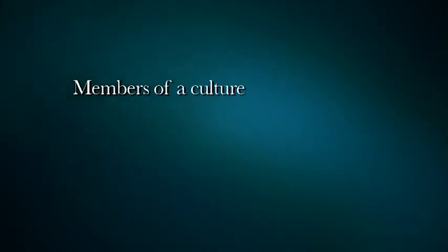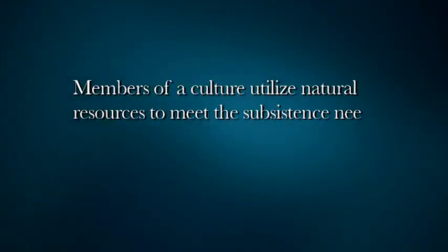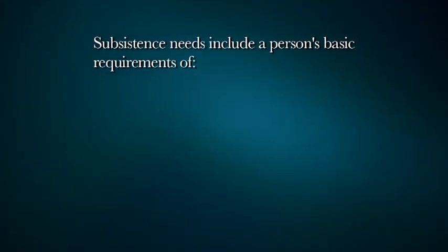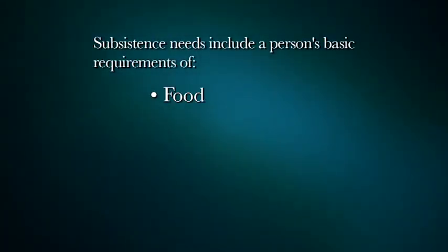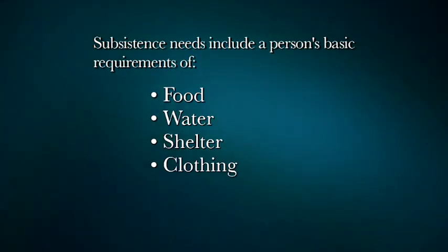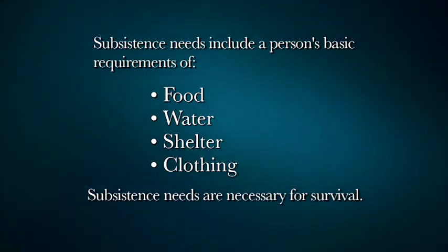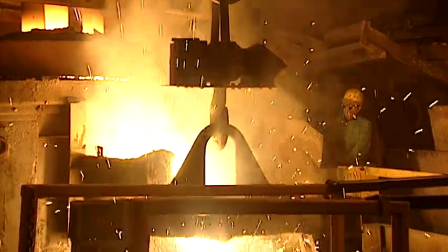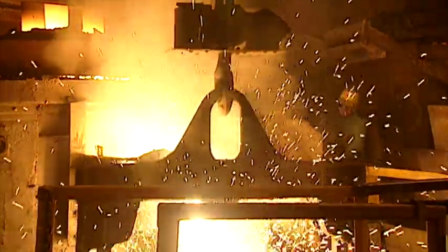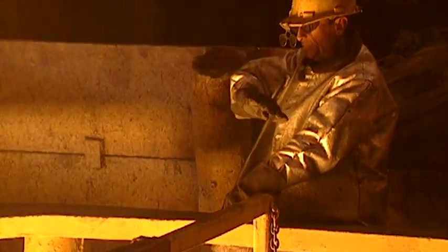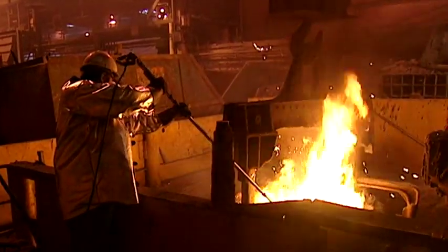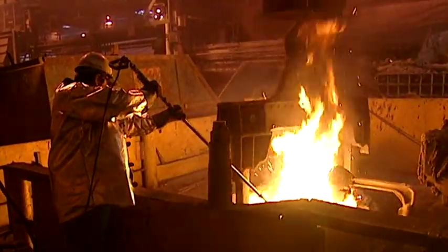Members of a culture utilize natural resources to meet the subsistent needs of the population. Subsistent needs include a person's basic requirements of food, water, shelter and clothing — necessities for survival. People often engage in economic activities depending on the natural resources available to them. Minerals such as coal, iron or copper can be mined and used by the culture or sold and exported to other cultures.